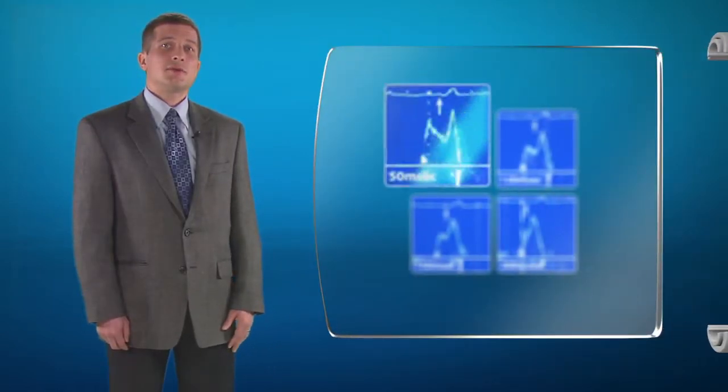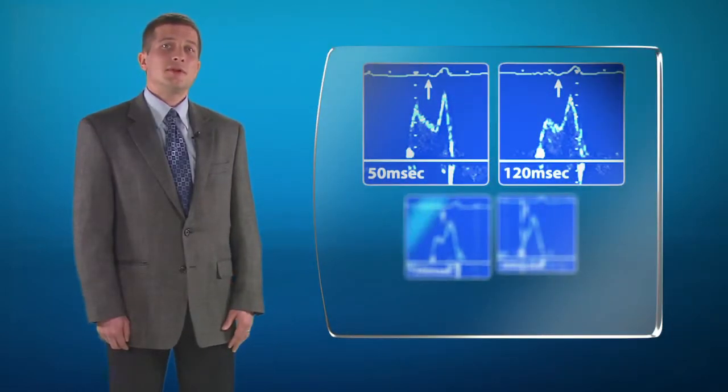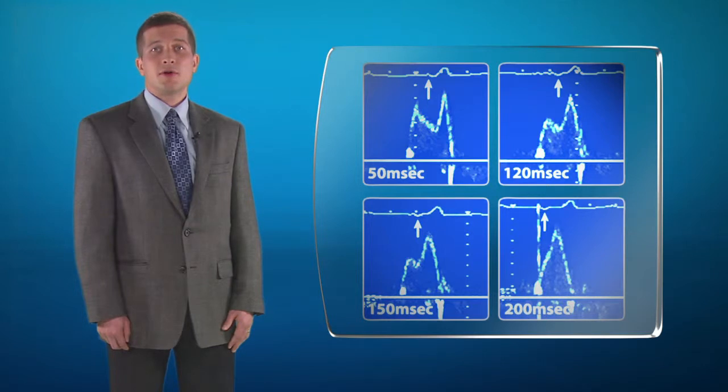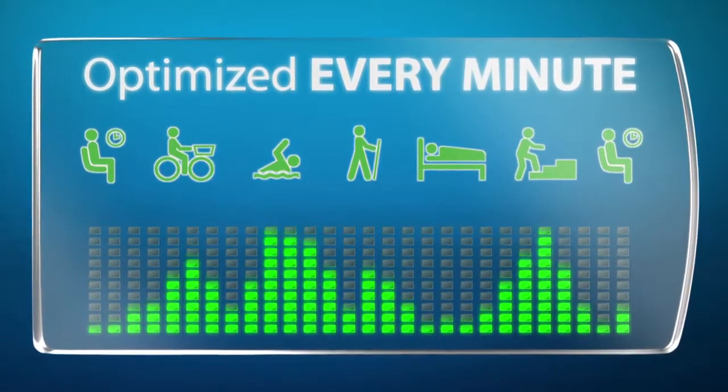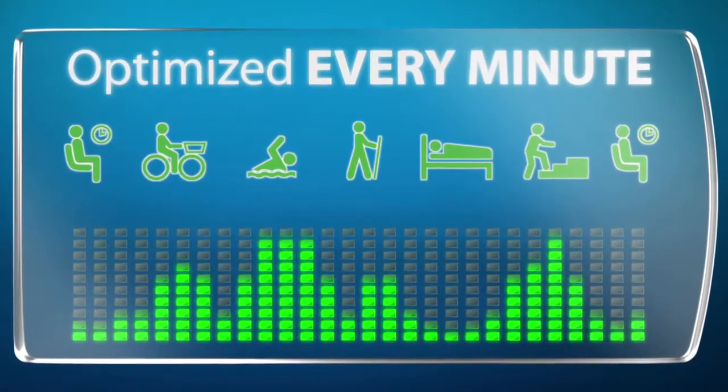Cardiac resynchronization therapy systems are designed to manage ventricular conduction delays in patients with cardiac rhythm disorders. Each patient's conduction problem, however, is unique, and ideally parameter settings should be optimized for each patient. To date, CRT optimization has been a time-consuming, manual trial-and-error process requiring ultrasound evaluations. In addition, settings may need adjustment if the patient's activity level or condition changes.